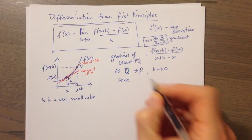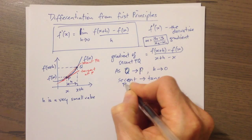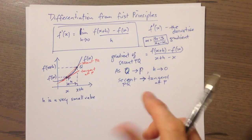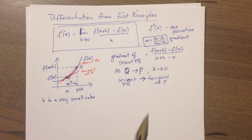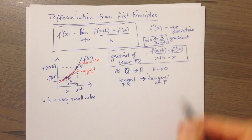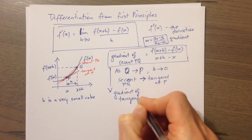As Q approaches P, h approaches zero, but also we can say that the secant approaches the tangent — the secant PQ approaches or becomes a tangent at P. All of these are different ways of saying the same thing: we're looking at the scenario where Q is so close to P that it becomes the same point. The two points become one.